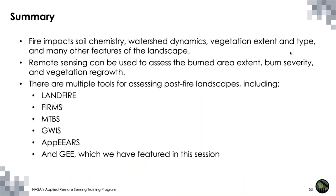To summarize: fire impacts many aspects of the ecosystem — soil chemistry, watershed dynamics, vegetation extent and type, and many other features. Remote sensing can be used to assess burned area extent, burn severity, and vegetation regrowth. We also mentioned tools for assessing post-fire landscapes, such as LANDFIRE, FIRMS, MTBS, GWIS, APPEARS, and of course Google Earth Engine, which we'll take a look at soon.